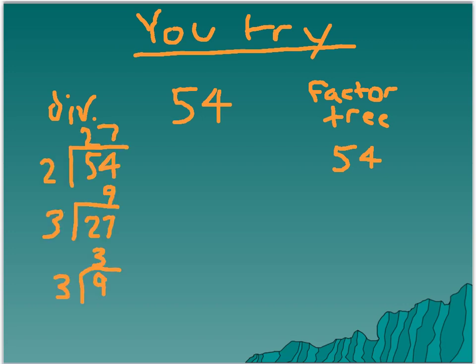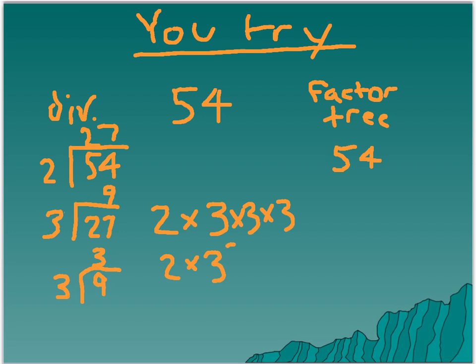In the division method, we make sure to divide by prime numbers. So we have 54 divided by 2, equaling 27. 27 is divisible by 3, which equals 9. And 9 is divisible by 3, which equals 3. Looking at those prime numbers — 3, 3, 3, and 2 — that's our prime factorization of 54, which is 2 times 3 to the third power.